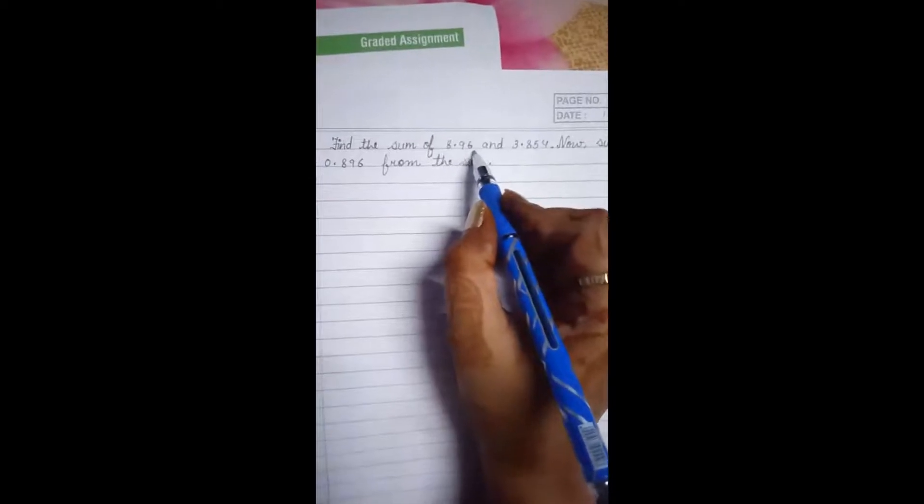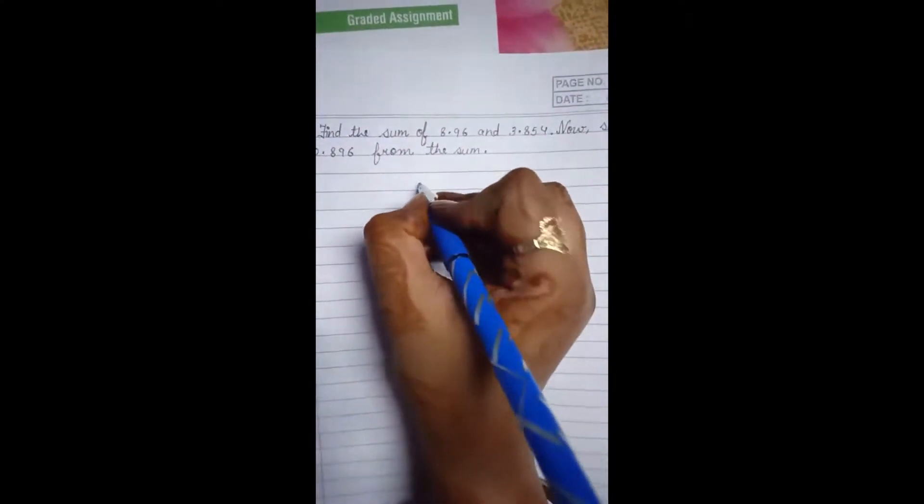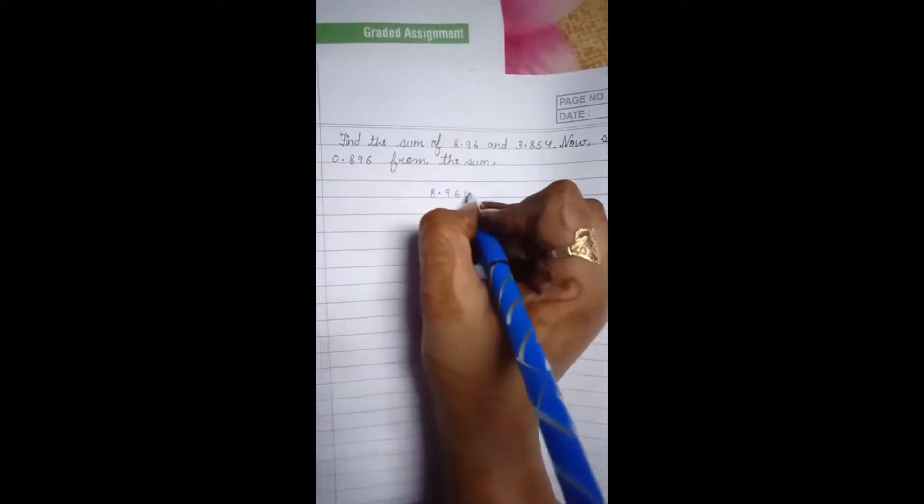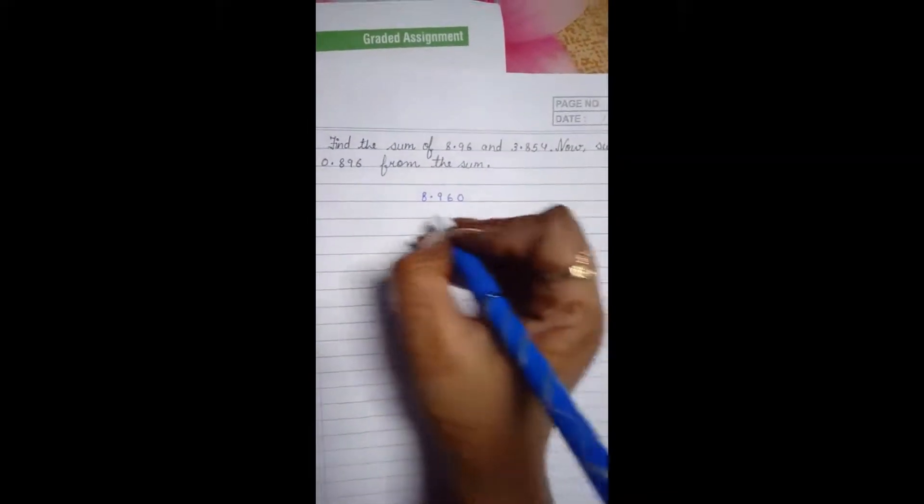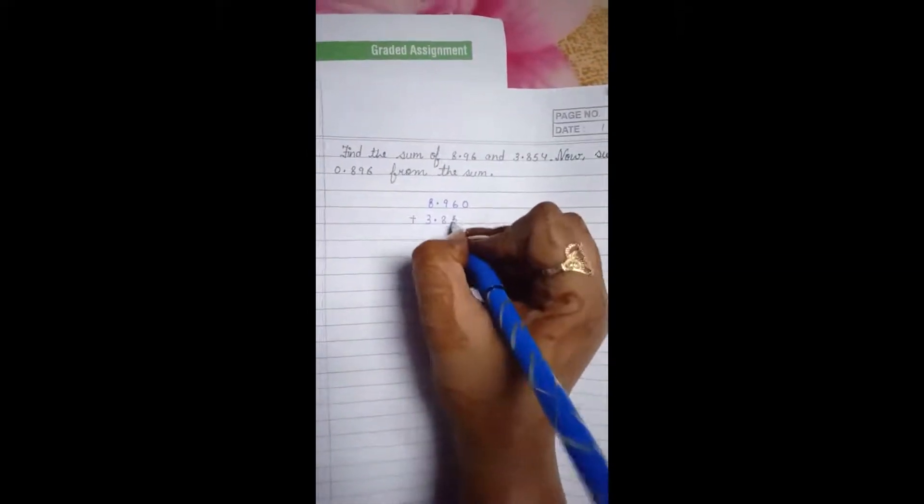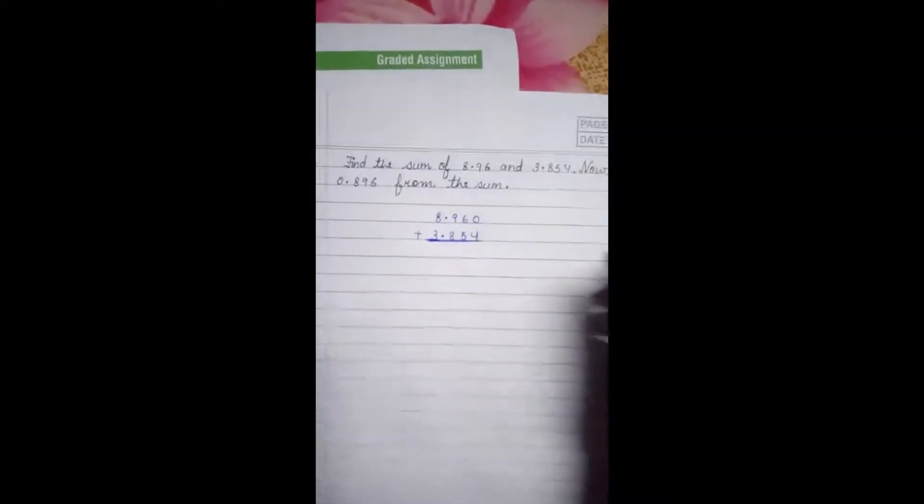You can see here we have only 2 decimal places and here we have got 3 decimal places. So we will first convert them into like decimals. 8.960, I have added a 0 here, plus 3.854. Now let us start adding.